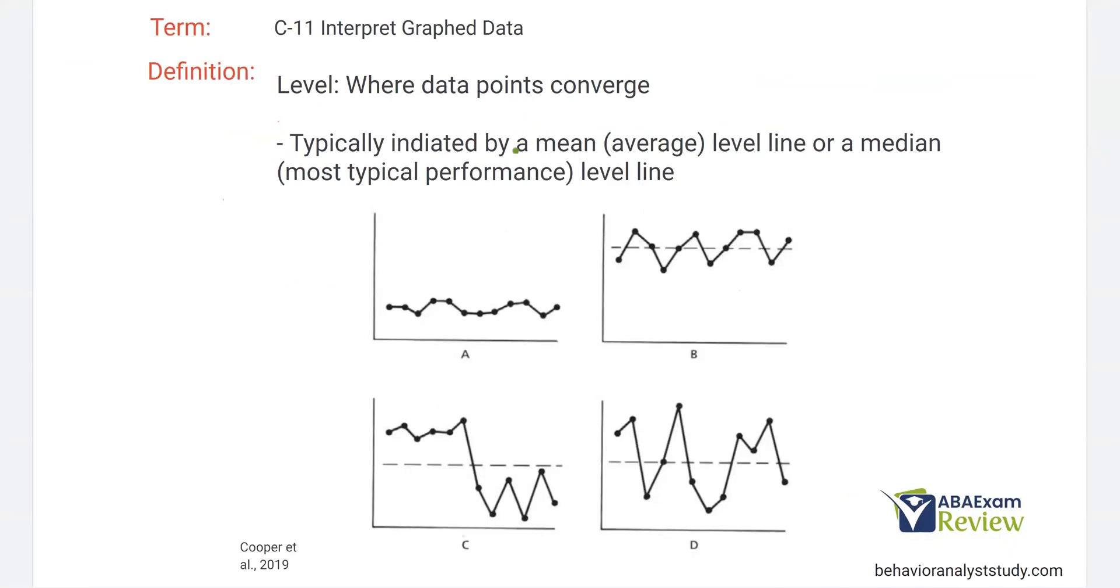Now, let's look at level. This is where data points converge. Typically indicated by a mean average level line or a median level line. And the difference is a mean level line can be affected by outliers and anomalies. If you have a constant behavior data path like an A, and then you have data points here and here, those two data points are really going to mess up the average. So a lot of times you want to try to find a median level line. The median line is just the most typical performance.